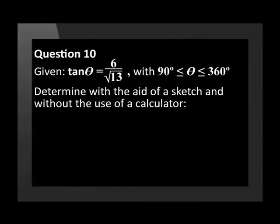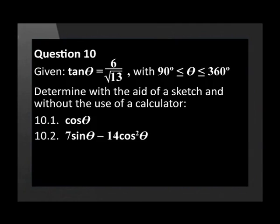Question 10. Given that tan theta equals 6 over square root 13, with theta greater than or equal to 90 degrees and less than or equal to 360 degrees, determine with the aid of a sketch and without the use of a calculator: cos theta, 7 theta minus 14 cos squared theta, and cos theta times tan theta.